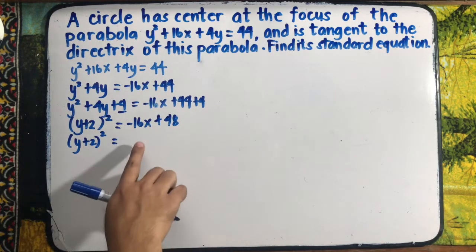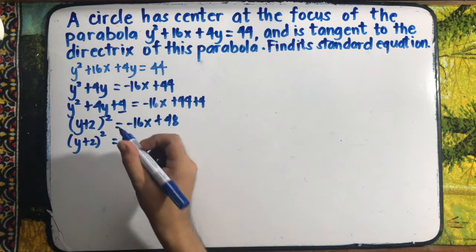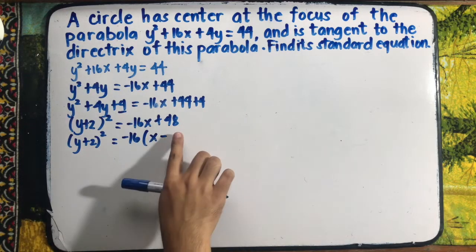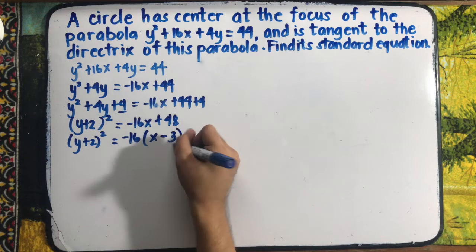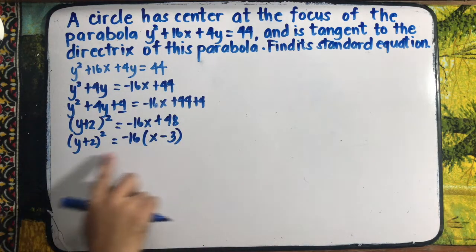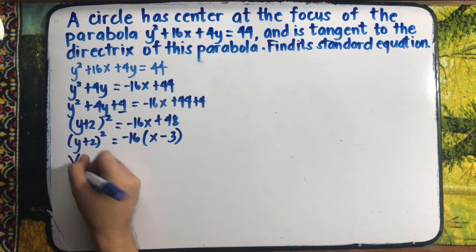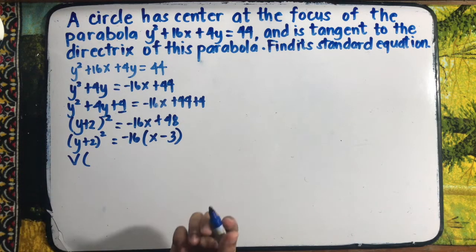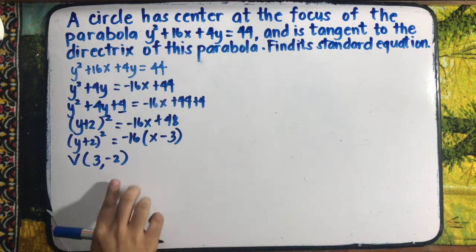We factor out the coefficient of x: (y + 2)² = negative 16 times (x minus 48/16), which simplifies to (y + 2)² = negative 16(x − 3). Therefore, the vertex is located at positive 3, negative 2.